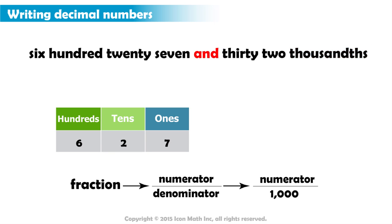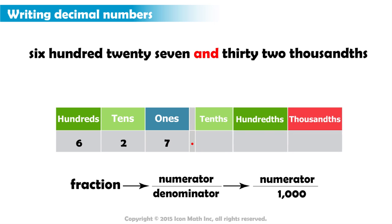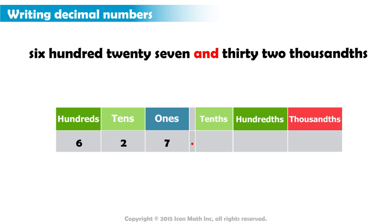If the words were hundredths, the denominator would be 100. And if it were tenths, the denominator would be 10. But since the denominator has three zeros, the decimal part should be represented with three decimal places. This means we need to fill in the places for the tenths, the hundredths, and the thousandths.